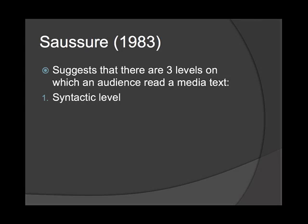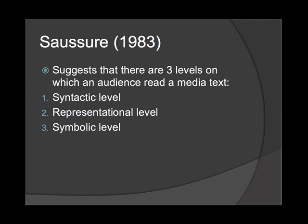The second is the representational level, which looks at the representation of characters or places in the text — how a particular character or place has been portrayed. The last is the symbolic level, which involves the hidden cultural or symbolic meaning the text conveys to the viewer. Both the representational and symbolic levels are examples of connotations, which is what you were doing at AS level.